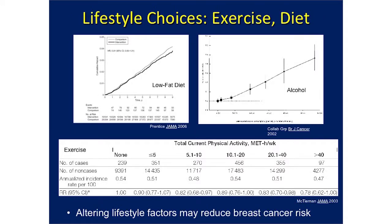Finally, a word on lifestyle choices. Various trials looking at interventions like a low-fat diet showed some evidence of a reduction in risk. With increasing amounts of alcohol, there's an association with increased risk; with increasing amounts of exercise, decreased risk. The effect sizes tend to be rather modest, but certainly these are things that people can do and are important to emphasize as well.